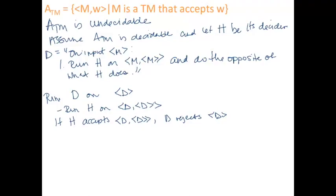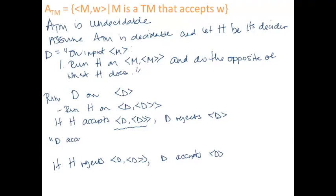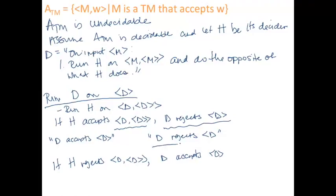Likewise, the other case: if H rejects DD, then D accepts D. Remember what this means — D accepts the string that's the encoding of D, and D rejects means D rejects the encoding of D. So when we run D on its own description, if it rejects its description, this implies that it accepts its description. D does the opposite of what D does, which is a contradiction. So we've got that ATM is undecidable.